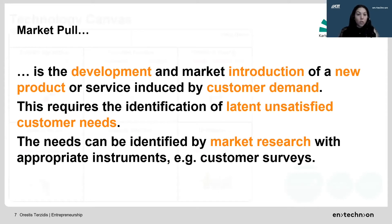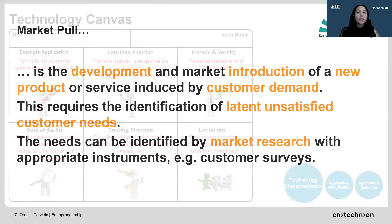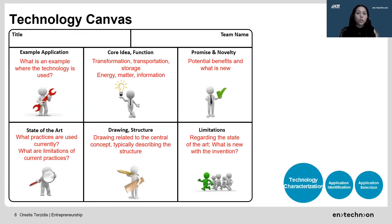For the first step, technology characterization, the goal is that practitioners gain an in-depth understanding of the technology in question. To support this, we have developed the technology canvas. In order for a team to find application ideas for a specific technology, information about the technology needs to be gathered first, which is what we achieve by filling out the technology canvas. Its six boxes are inspired by the elements of a patent and describe the most important information to characterize a new technological invention.